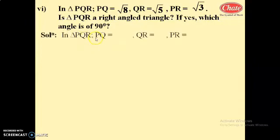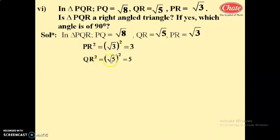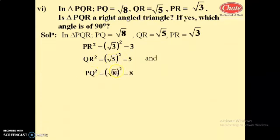In triangle PQR, PQ equals root 8, QR equals root 5, PR equals root 3. First, PR squared equals root 3 squared, which is 3. Next, QR squared equals root 5 squared, which is 5. And PQ squared equals root 8 squared, which is 8.